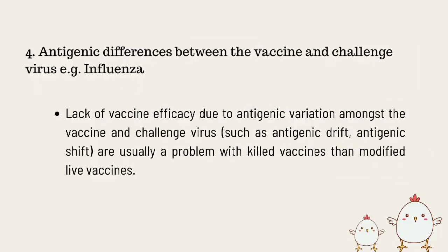Fourth, Antigenic Differences Between the Vaccine and Challenge Virus — for example, Influenza. Lack of vaccine efficiency due to antigenic variation between the vaccine and challenge virus, such as antigenic drift and antigenic shift, are usually more of a problem with killed vaccines than modified live vaccines. Accordingly, effective antibody-mediated immunity is developed when the antibody exactly binds to the specific antigenic strain on the bacterial or viral surface.